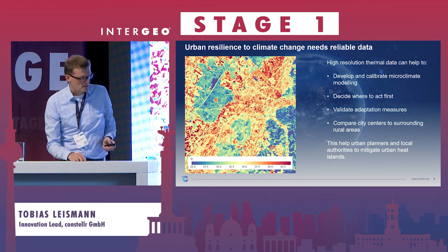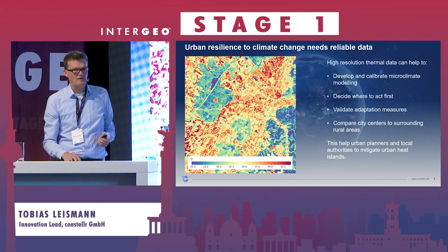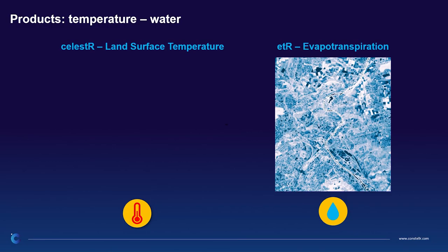We measure land surface temperature, but we also measure the evapotranspiration rate, which you can see on the right side of this slide. The evapotranspiration rate allows us to measure, for example, the health of urban vegetation and also the cooling amount you can get in different areas of the city. This image shows the center of Stuttgart during a very hot summer, and it actually shows that they did have a lot of water in the ground, so the cooling effect of the urban greens worked well in this case.